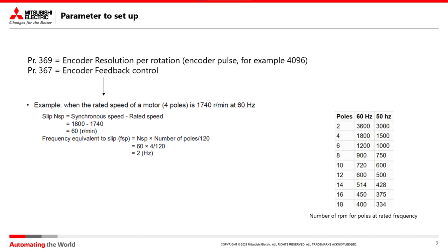Parameter 367 is the encoder feedback control. This value is obtained from a calculation: slip multiplied by the number of poles, with the whole divided by 120.